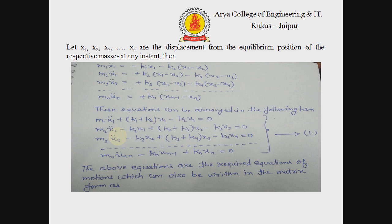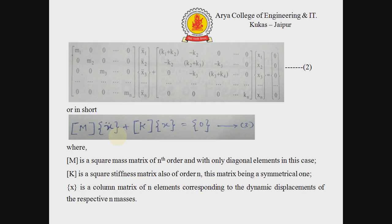The above equations of motion can also be written in matrix form, as shown in equation number two. In short, this is represented by equation number three, where m is the square mass matrix of nth order with only diagonal elements. k is the square stiffness matrix also of order n, being a symmetrical matrix. x is a column matrix of n elements corresponding to the dynamic displacement of the respective n masses.